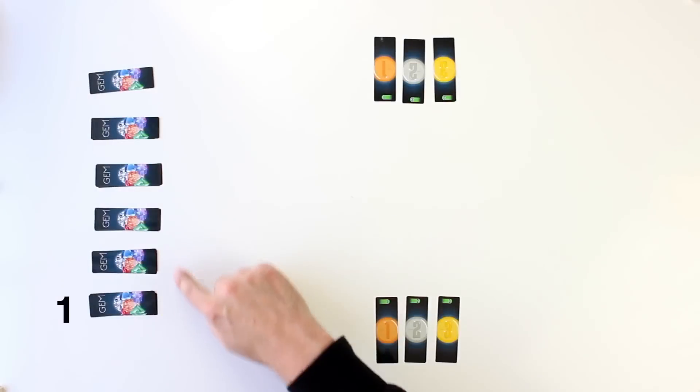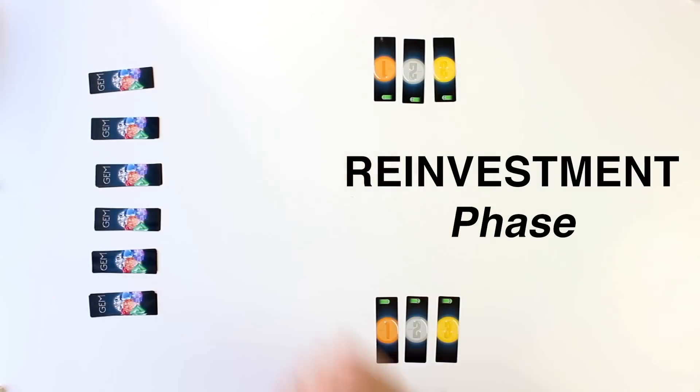In Gem, there are 6 rounds, each with an auction phase and a reinvestment phase.